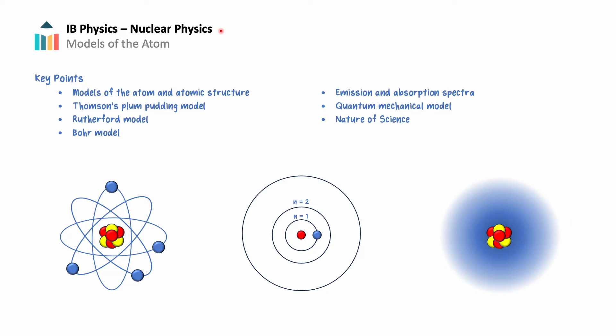In this video, we are going to introduce the basics of atomic physics. We will look at models of the atom and atomic structure as they have progressed through time, including Thomson's plum pudding model, the Rutherford model, and the Bohr model.